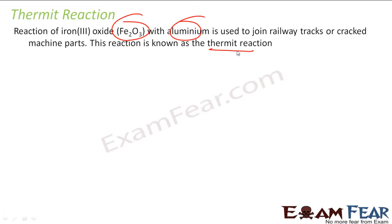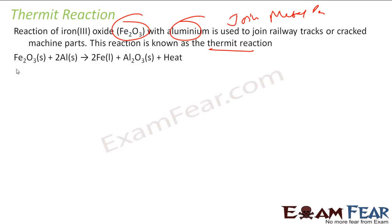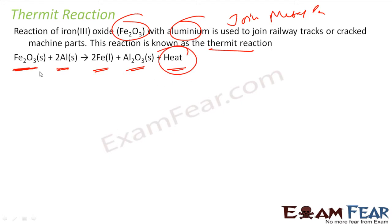Now we will discuss a new type of reaction called the thermite reaction. The reaction of iron oxide with aluminum is used to join railway tracks — this is called the thermite reaction. It is used to join metals and metal parts. The reaction is: iron oxide plus aluminum gives iron, Al2O3, and heat. It generates heat, which melts the metal and the metal parts are joined. This reaction is called the thermite reaction, a very common reaction to join metal parts.